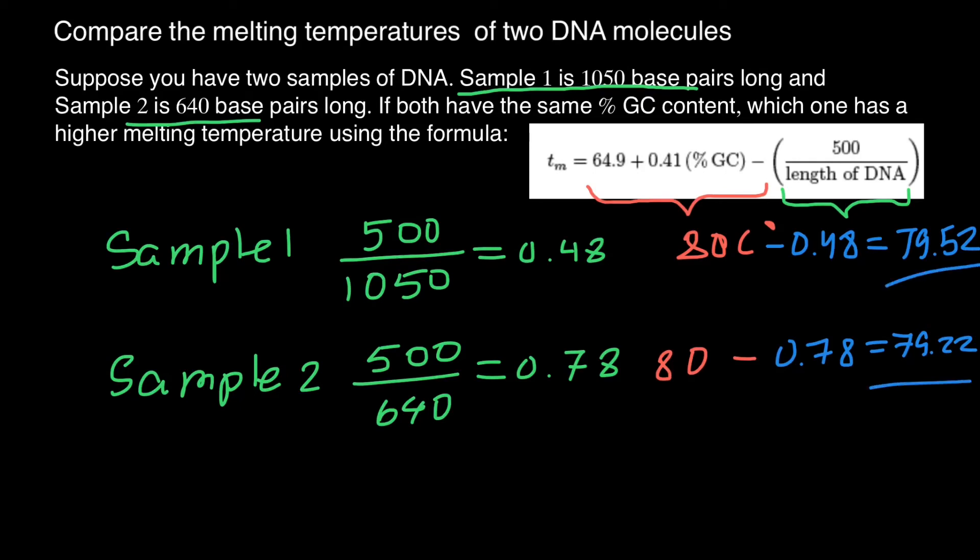So you see, these numbers are very close. And what is important actually is not as much the length of the DNA as GC content of the DNA.